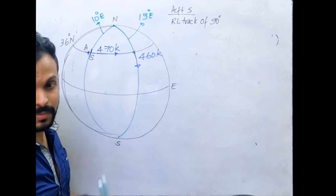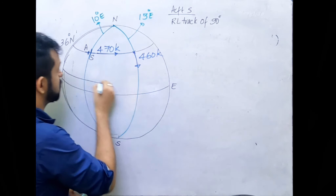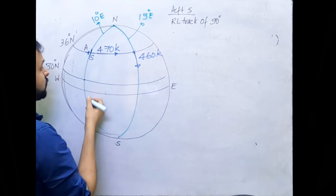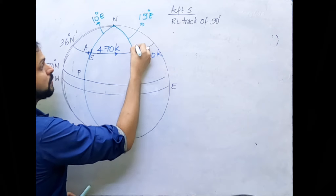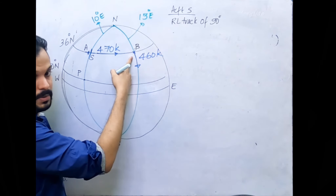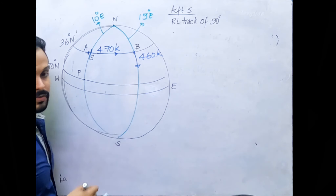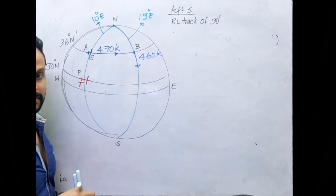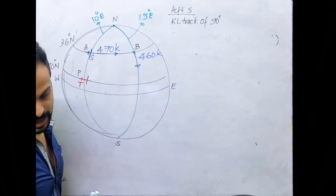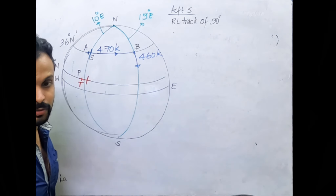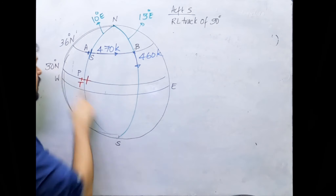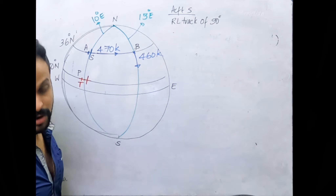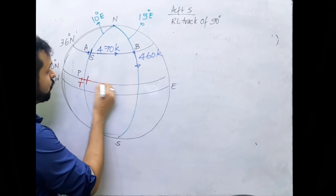Now Aircraft T leaves from 30° North, 10° East. Let's draw it — this is the 13° North latitude and 10° East meridian intersection. Mark this as point P. The intersection at the 13° East meridian as point B. So A to B is the travel of Aircraft S. Aircraft T starts from point P and flies a rhumb line track of 090° True — meaning it also travels east along the 30° North parallel of latitude, at a ground speed of 150 knots.